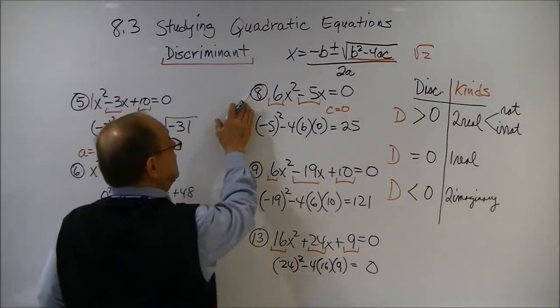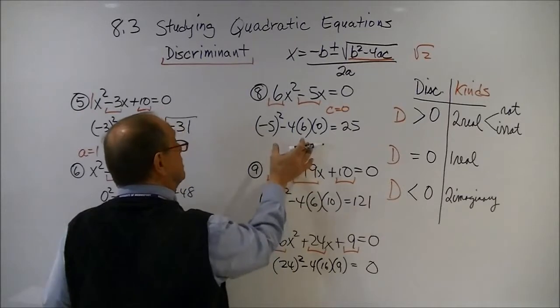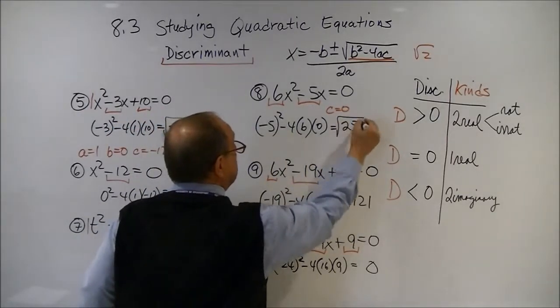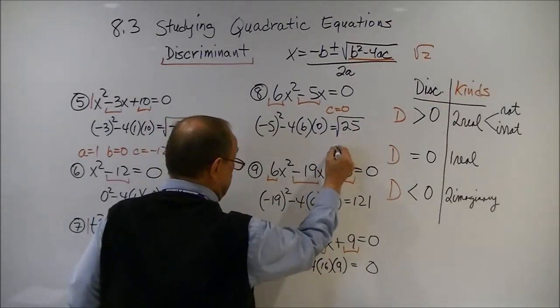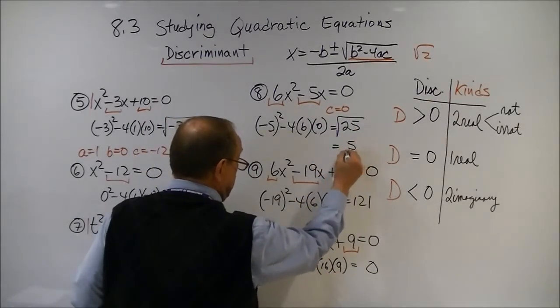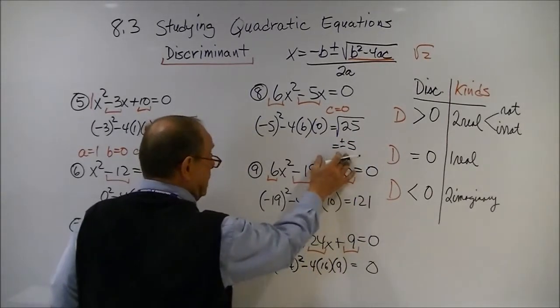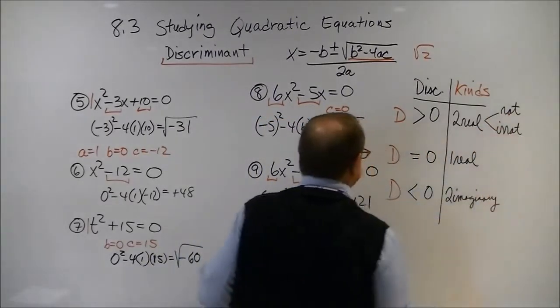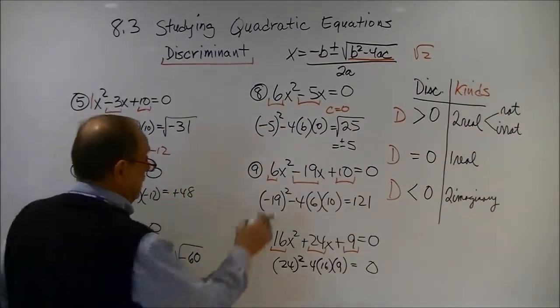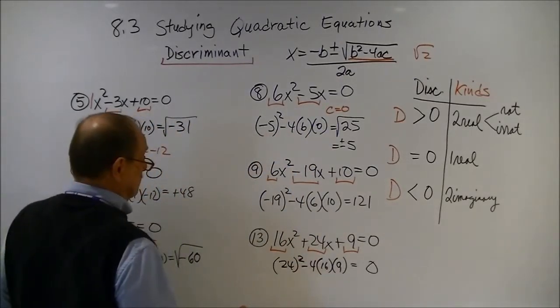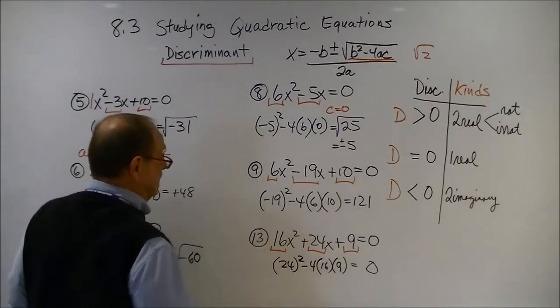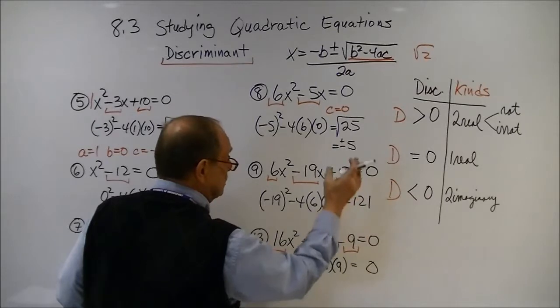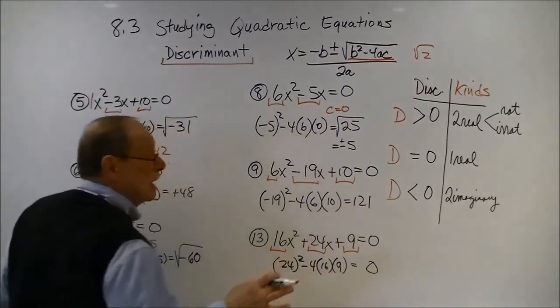Now, when I do number 8, again, taking my a, b, and c, putting it into the formula, I get my discriminant is 25. The square root of 25 is 5. Remember, that's a plus or minus. So, here, I'm going to get two real solutions, but they're going to be rational. I could actually factor that. Well, that's okay. But I get, for my discriminant, two rational, real solutions.